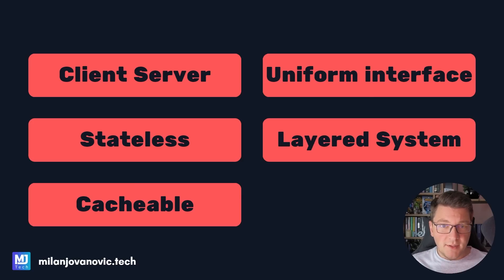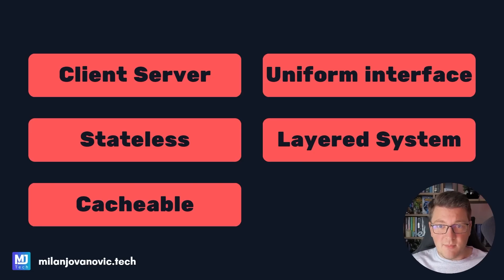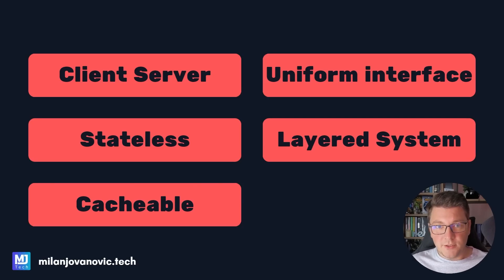The next REST constraint is called Layered System, and this gives you the flexibility of how you want to deploy your RESTful API. It can consist of multiple layers — for example, a reverse proxy, an API server, a cache, and a database — and all of this shouldn't concern the client application. The client only wants to know how to send an API request to wherever the REST API is exposed, and it doesn't need to know that the server actually consists of multiple layers of components.